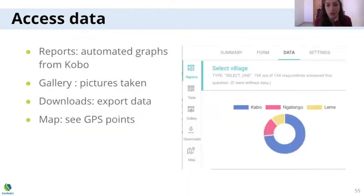Once your data is cleaned up, you can retrieve and download your data and see how it looks on the automated reports. The first option in your data tab under reports is basic graphs that are automatically generated by Kobo.